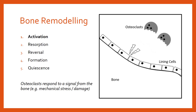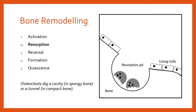An osteoclast — 'osteo' meaning bone, 'clast' meaning breaks or breaks down — is a cell that breaks bone down. The second stage is the resorption stage. Here, the osteoclasts create an acidic environment on the lining cells and essentially dig away at the surface of the bone. In spongy bone they dig a cavity; in compact bone it's more like a tunnel. The osteoclasts break out the old bone that's to be replaced.